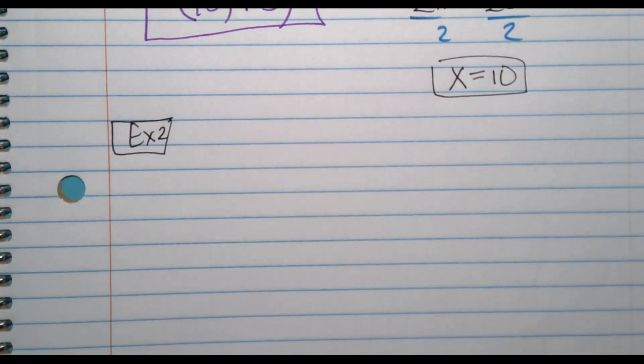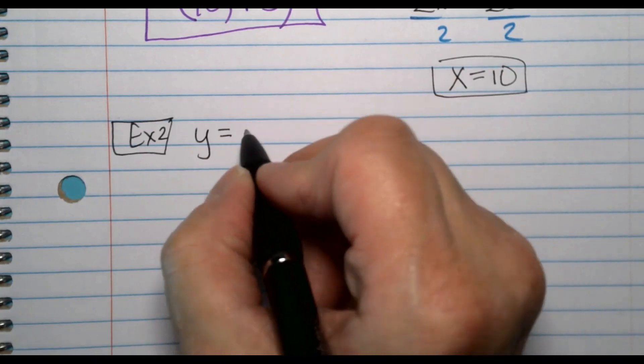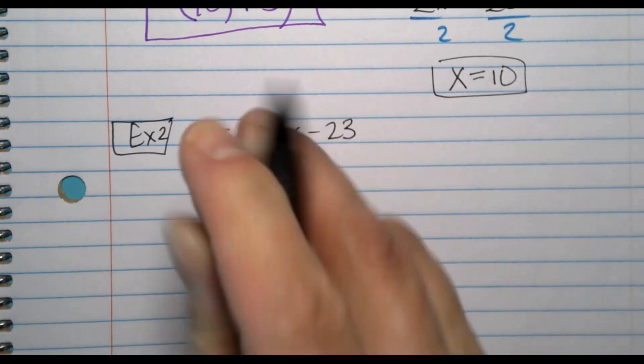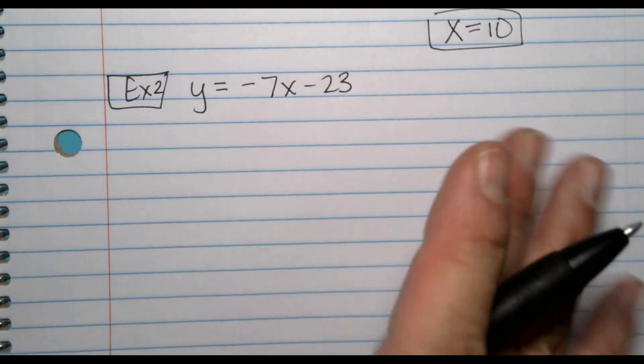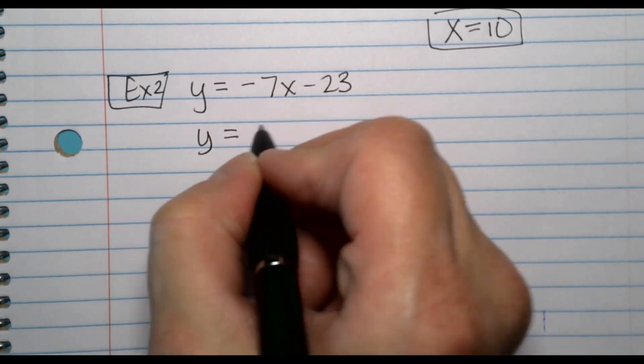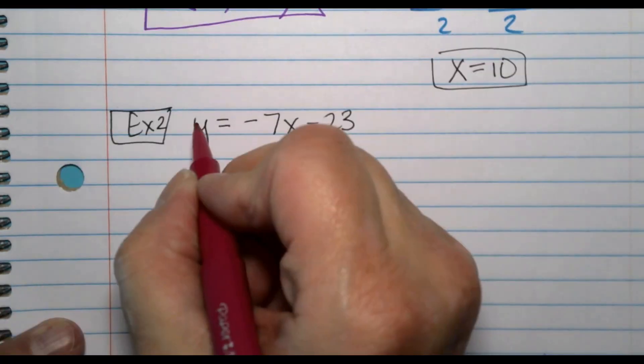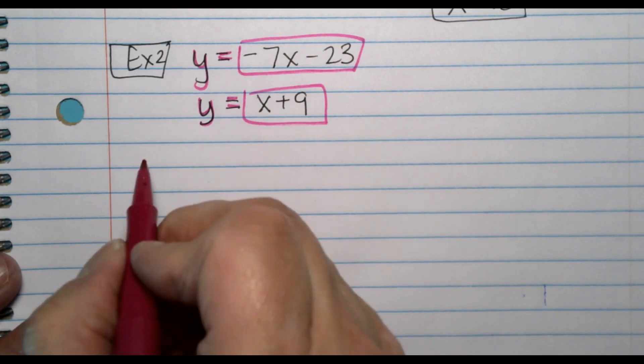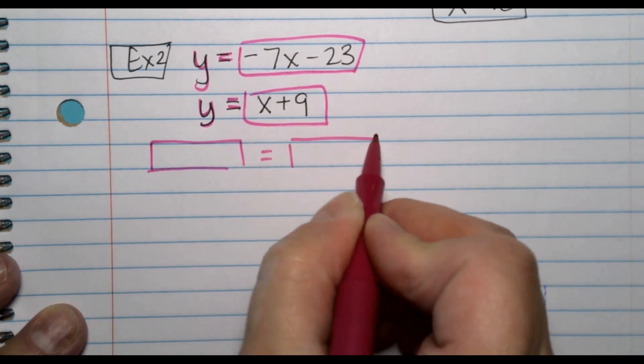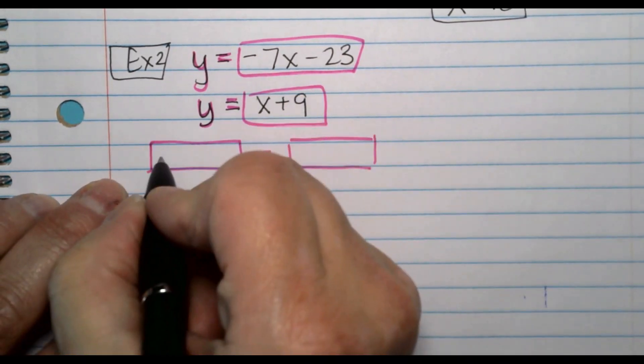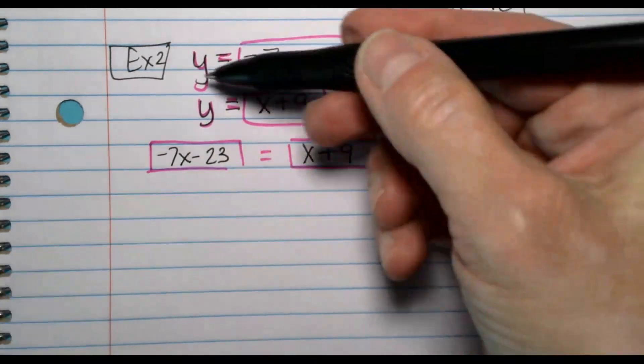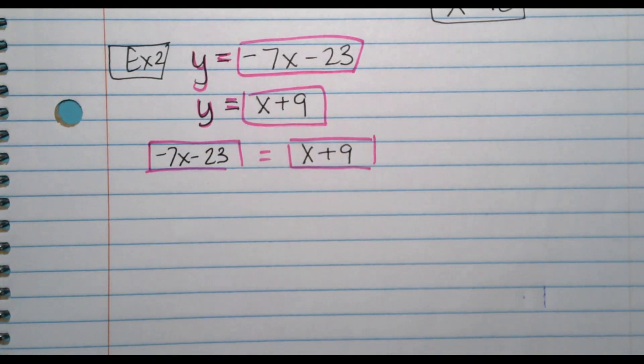Example 2: y equals negative 7x minus 23. We're kind of heavy on the negatives because I know we need to review that. And y equals x plus 9. Y equals this thing, but y also equals that thing. That means those two things must be equal to each other. Whatever is in the first box equals what's in the second box because the problem says y equals both of those things. So they have to be equal to each other. I don't know what the x is that's going to make that happen, but that's what we're about to figure out.